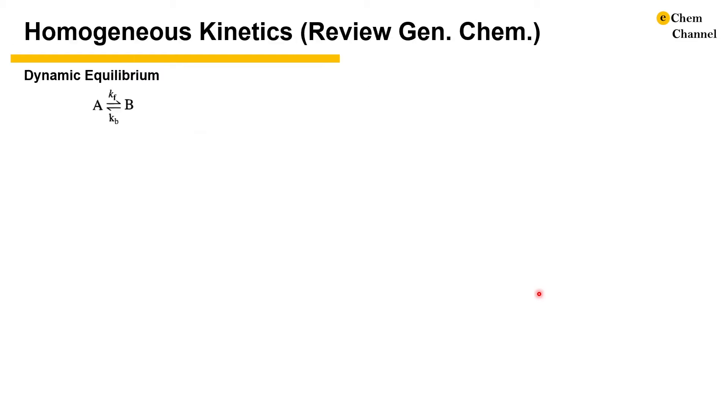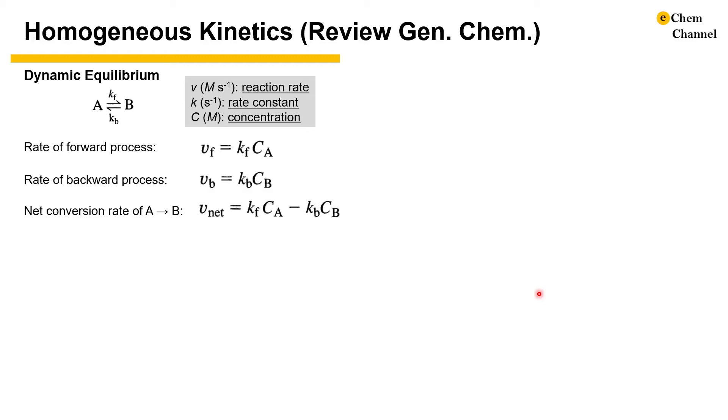Let's warm up with some homogeneous chemical reaction kinetics taught in general chemistry. When two substances A and B are linked together by elementary reactions, the rate of reaction in the unit of molar per second can be described by the product of rate constant and concentration. The rates of forward, backward, and net conversion are shown here.